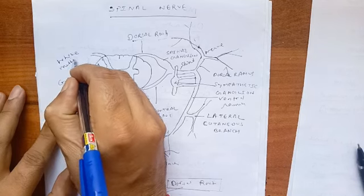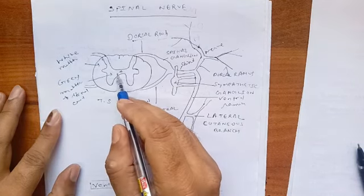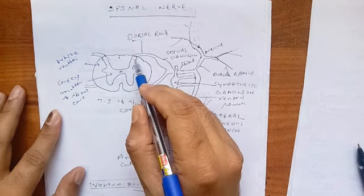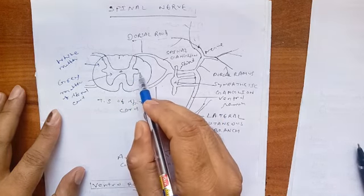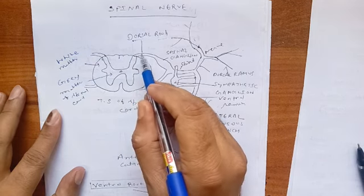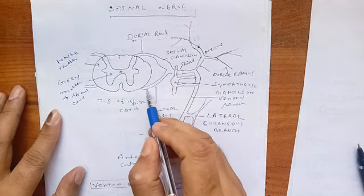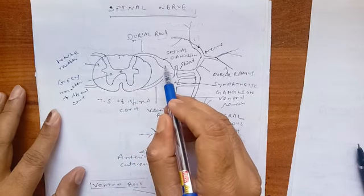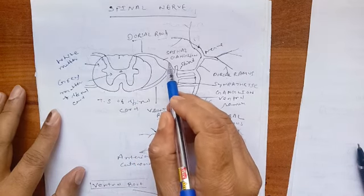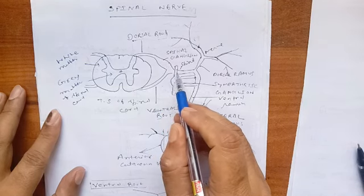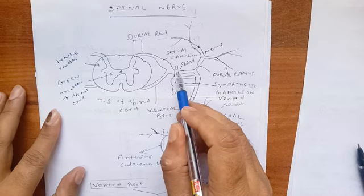In the center there is the gray matter; in the periphery there is the white matter of the spinal cord. This is the central canal of the spinal cord. These are the anterior horn cells, the lateral horn cells, and the posterior horn cells. From the spinal cord, the dorsal root and the ventral root arise, and from the dorsal root, the dorsal root ganglion — which is the sensory ganglion — arises.